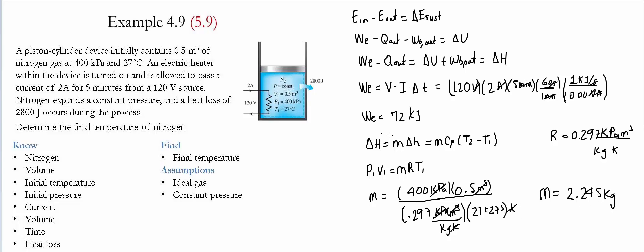Now that we have the mass, we only are missing the value of Cp, which we find in the back of the book for nitrogen. It gives us 1.039 kilojoules per kilogram Kelvin.